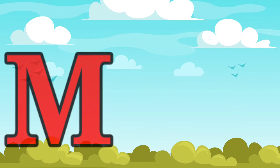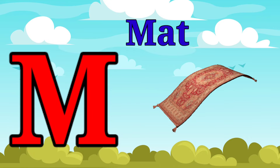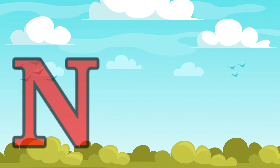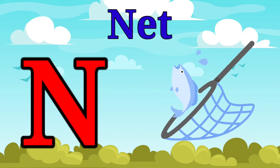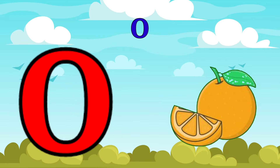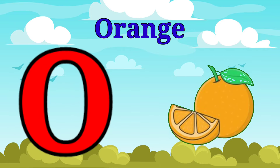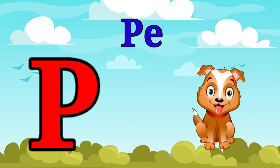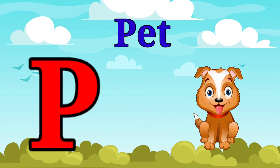M is for mat, m-m-mat. N is for net, n-n-net. O is for orange, o-o-orange. P is for pet, p-p-pet.